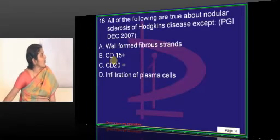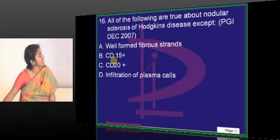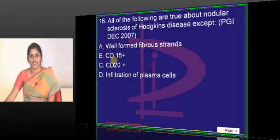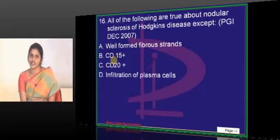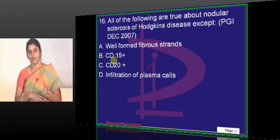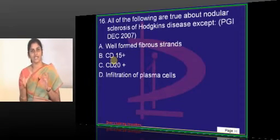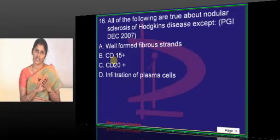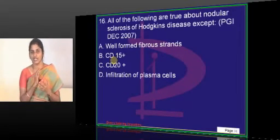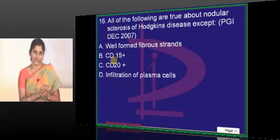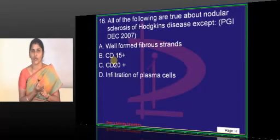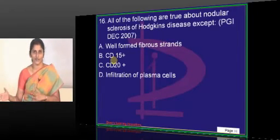All of the following are true about nodular sclerosis of Hodgkin disease except. So you have lymphoma subtype, how it's classified. That happened only with last but one classification, REAL classification. Lymphoma, Hodgkin lymphoma, so it's like classical and non-classical Hodgkin lymphoma. So we have four subtypes under classical and one under non-classical. Non-classical Hodgkin lymphoma includes lymphocyte predominant subtype. Classical lymphoma, Hodgkin lymphoma includes nodular sclerosis, lymphocyte rich, lymphocyte depleted, and mixed cellularity.